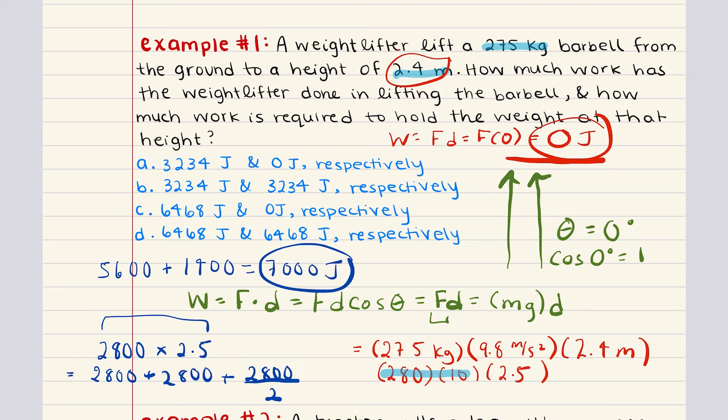The answer that best relates to those two values — approximately 7,000 joules for lifting and zero joules for holding — is going to be answer choice C. So problem number one is C.